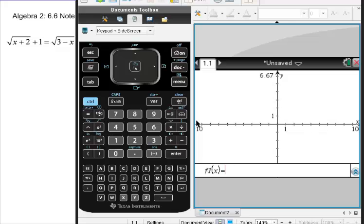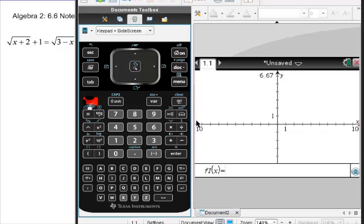And so into the first function line, we're going to put the square root of x plus 2 plus 1.